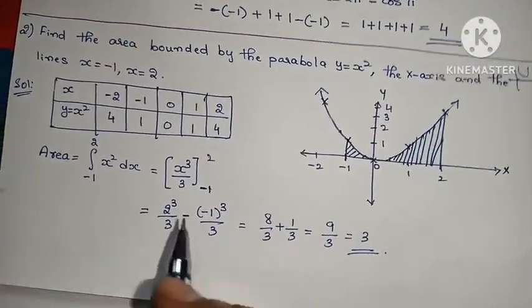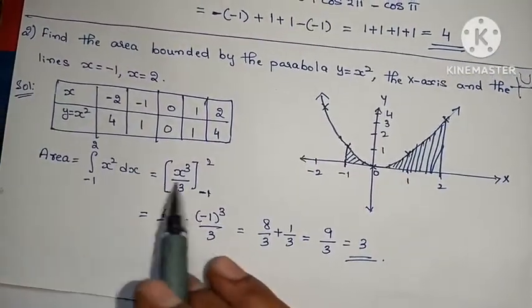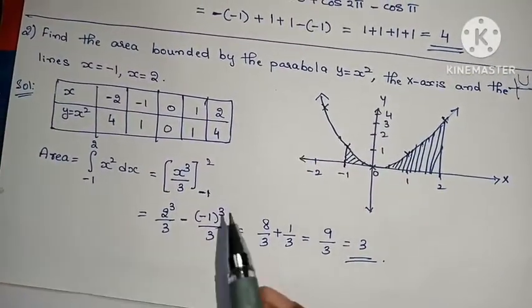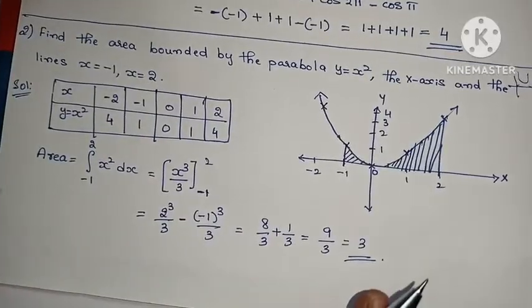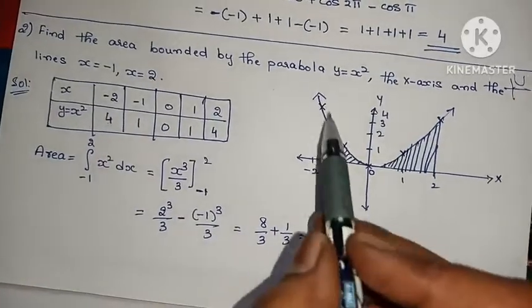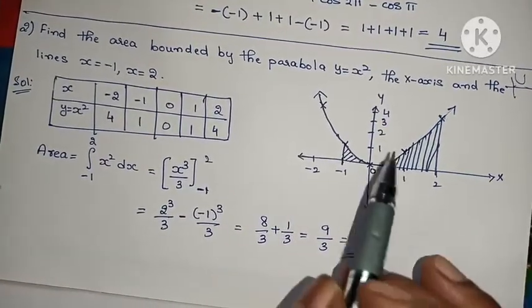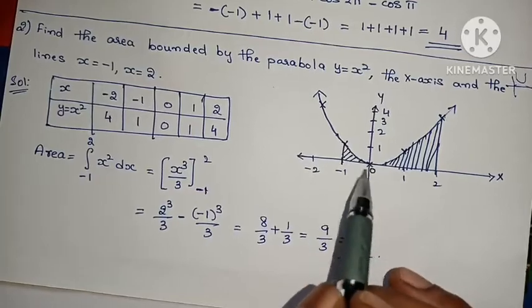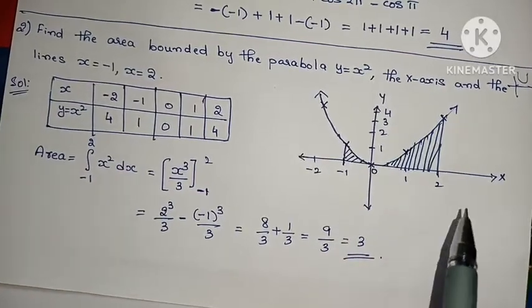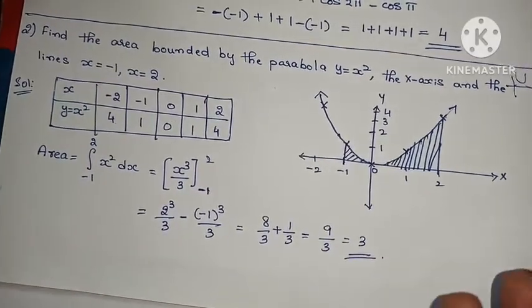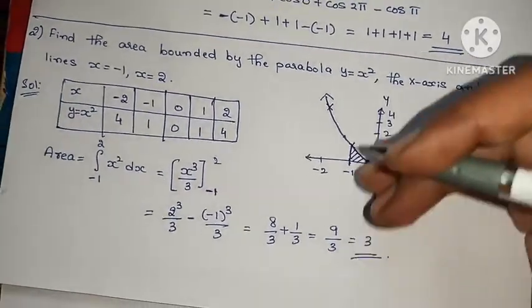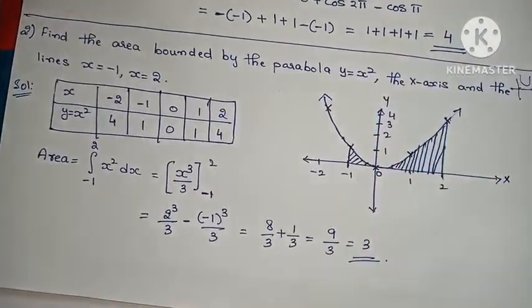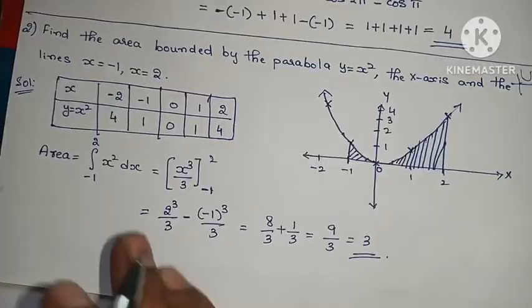Note: from x = −1 to 0 the curve is in the negative x direction but y = x² is positive (above x-axis). From 0 to 2 it is also positive. So in this problem, the y-axis direction is positive throughout.